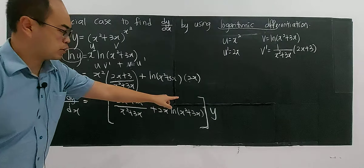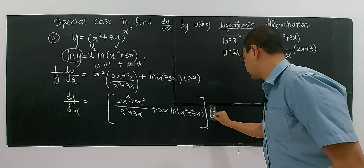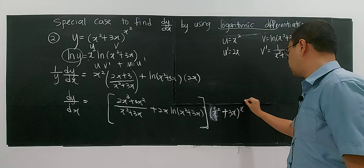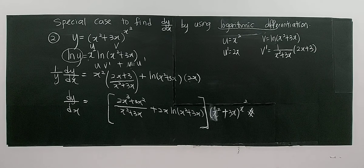Now move the y over. Since the left side is (1/y)(dy/dx), multiplying both sides by y gives dy/dx equals y times the whole expression: (2x³ + 3x²)/(x² + 3x) + 2x·ln(x² + 3x). Substituting back, y is (x² + 3x)^(x²), so dy/dx equals (x² + 3x)^(x²) multiplied by [(2x³ + 3x²)/(x² + 3x) + 2x·ln(x² + 3x)]. That's how we differentiate a function to the power of another function. That's all for this video.